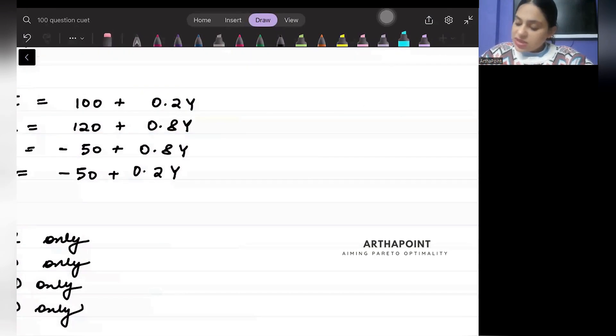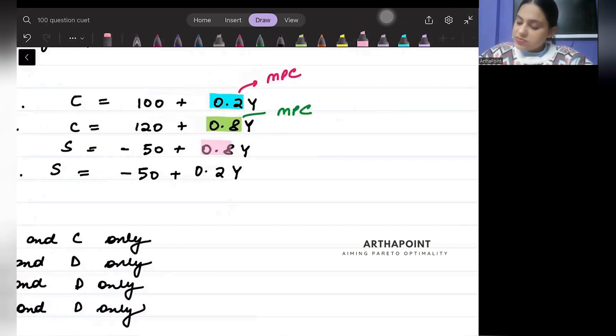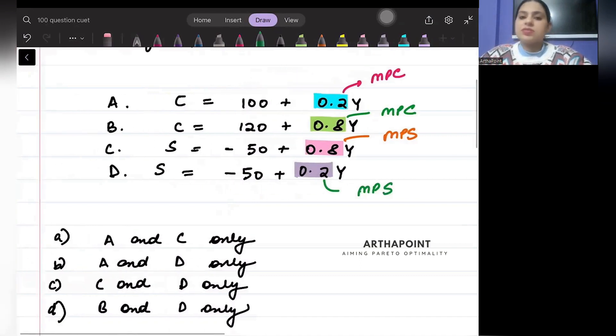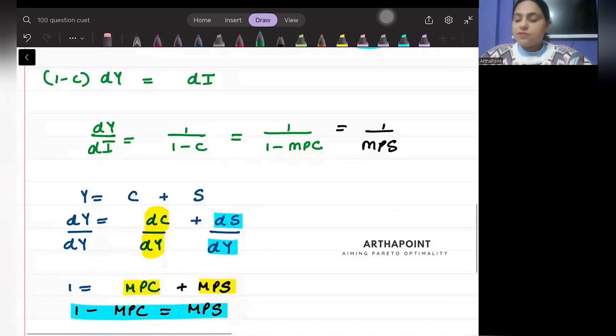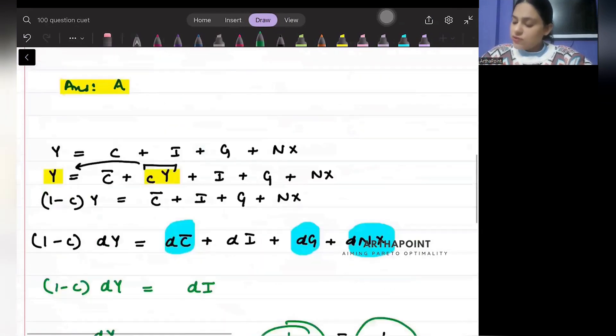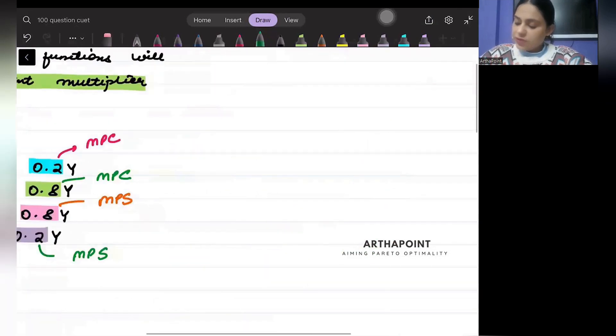So what I can now go ahead and do is that I can say that this part is my MPC, this part is my MPC, this part is my MPS, and this part is also my MPS. What is multiplier? 1/(1 - MPC) or 1/MPS.